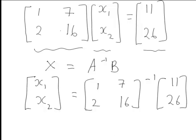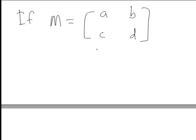So before we do this let's review how we find the inverse of a 2 by 2 matrix. And if we have a matrix 2 by 2 matrix M of general form ABCD then the inverse matrix M inverse is equal to